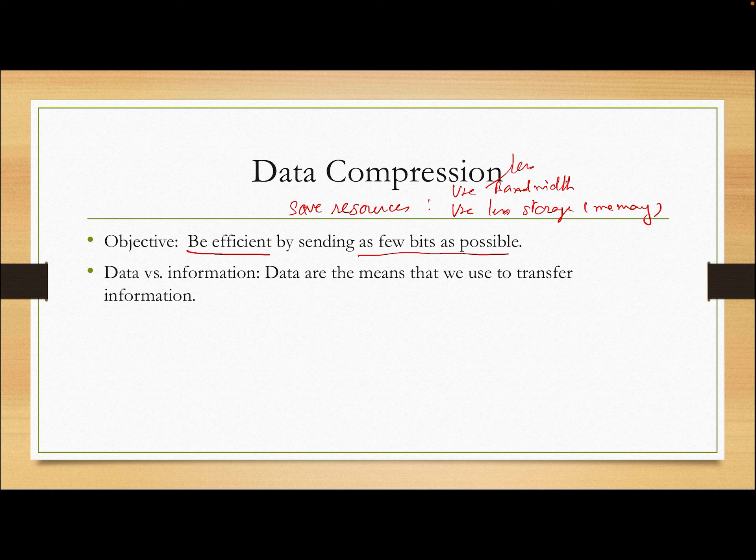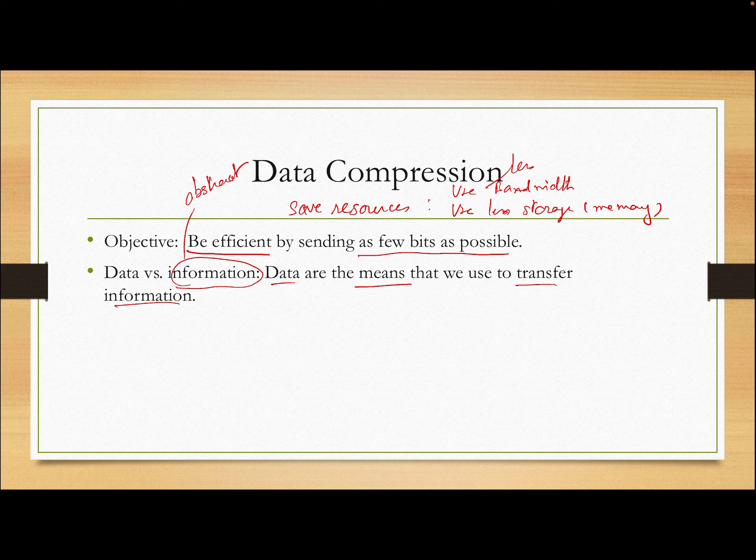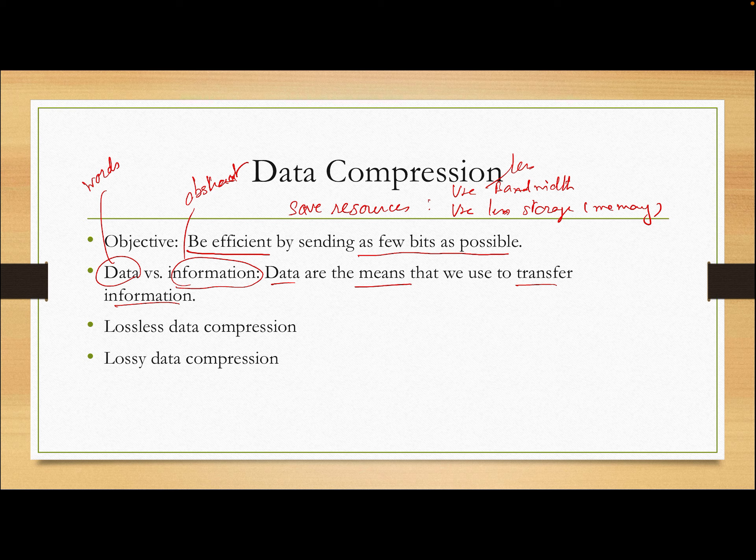We will use less bandwidth. If we have fewer bits to transmit, use less bandwidth, use less storage or memory. If the file size is smaller, so it's good. Now, in order to understand how we can compress the data, we have to understand that data and information, they are different. Information is something abstract.